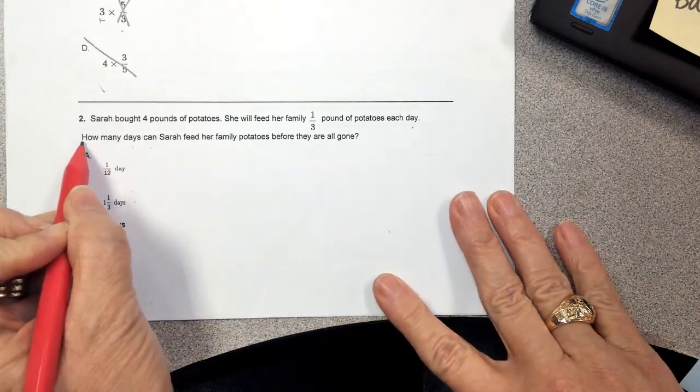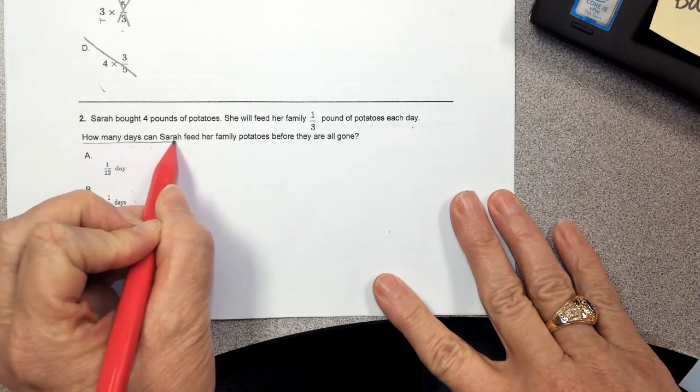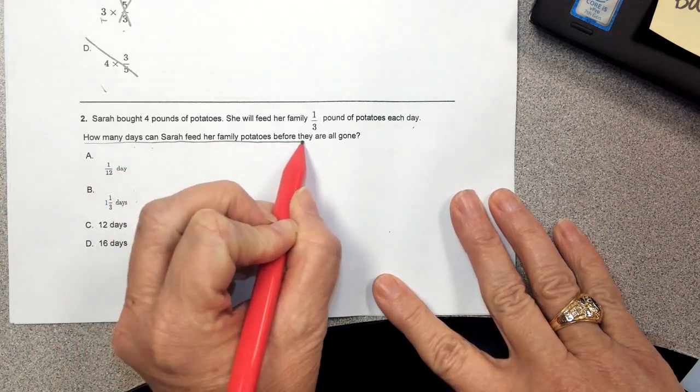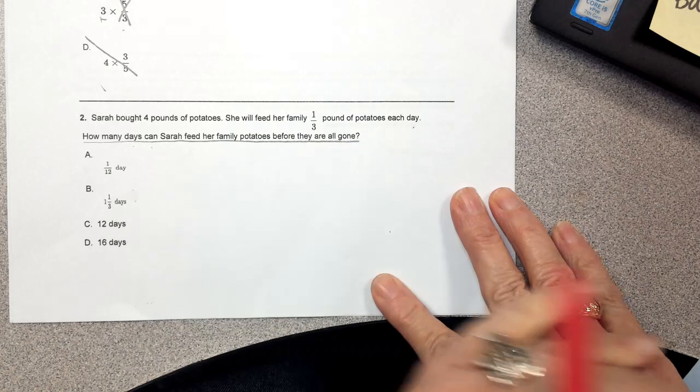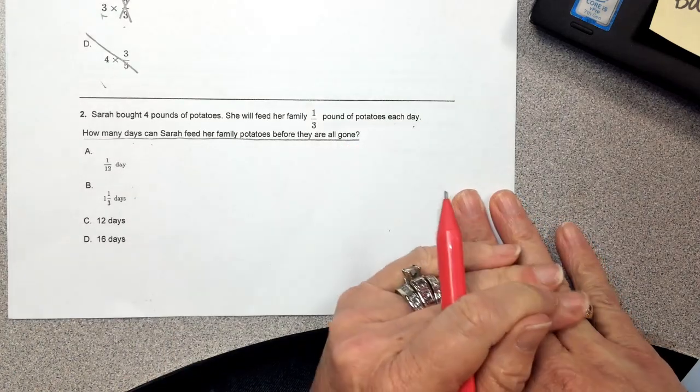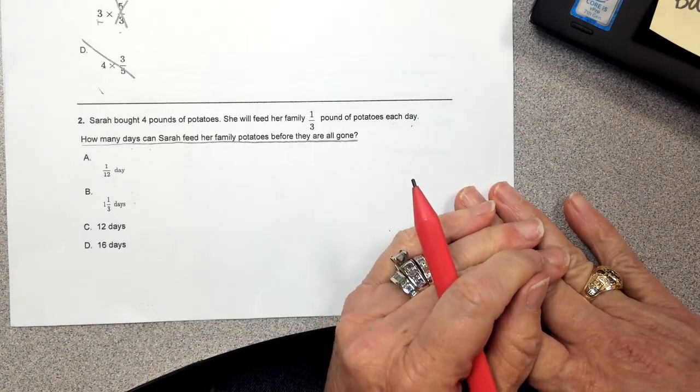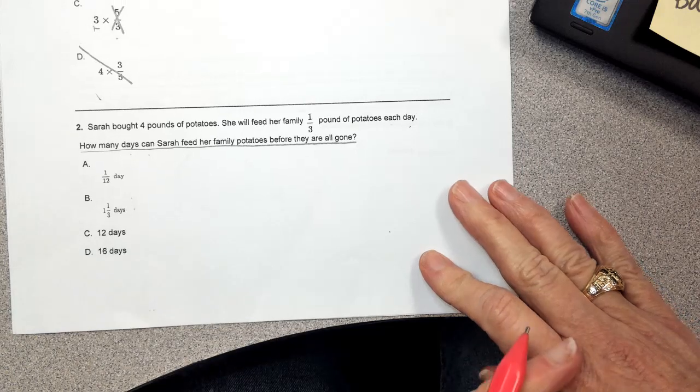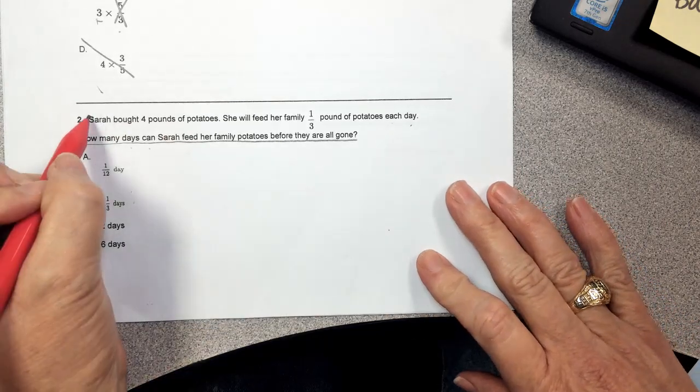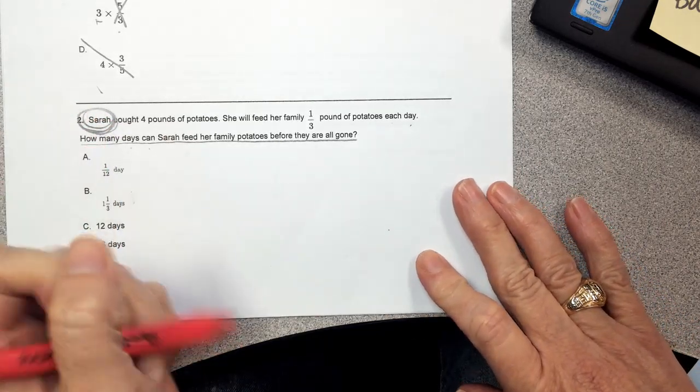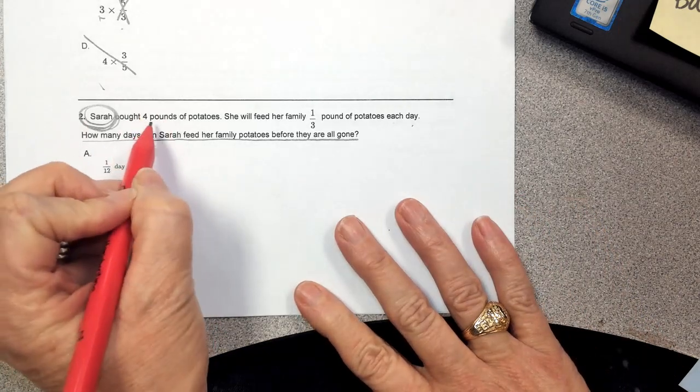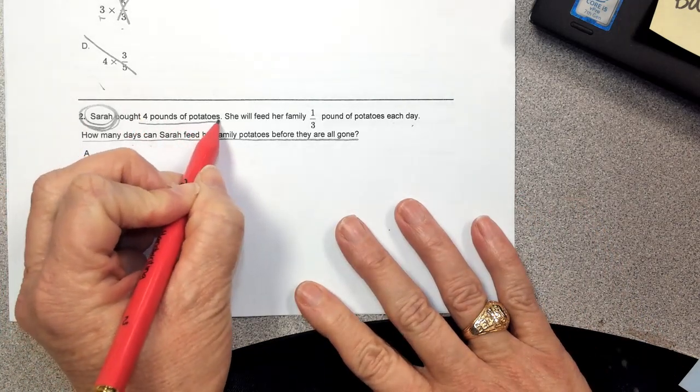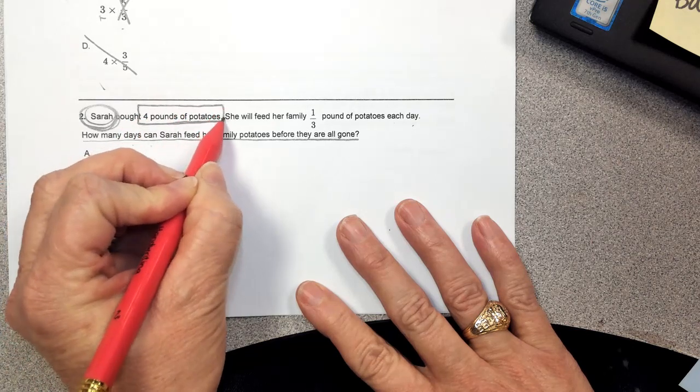So my question is wanting to know how many days can Sarah feed her family potatoes before they're all gone. And so I'm going to start with my basic questions: who's in the story and what do they have? The person in the story is Sarah. And what does Sarah have? Sarah has four pounds of potatoes to share with her family.